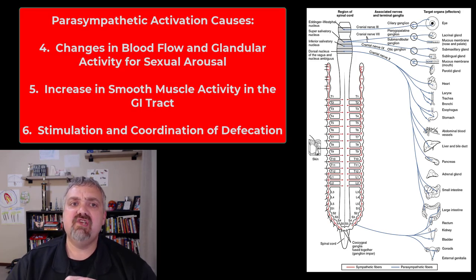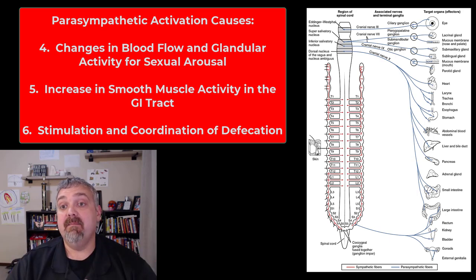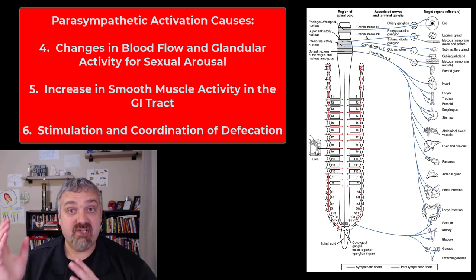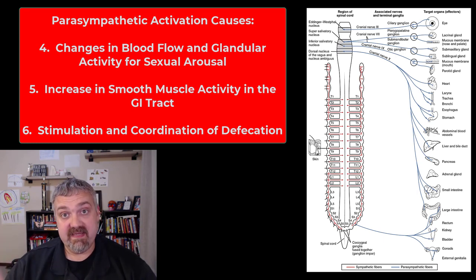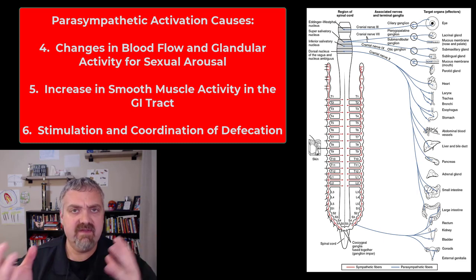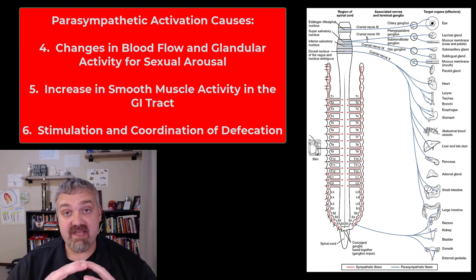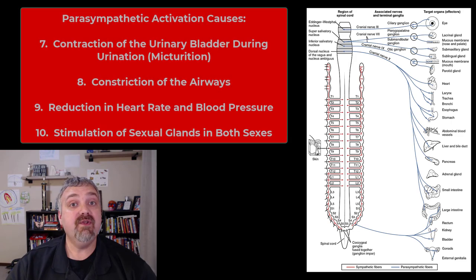Number four would be changes in blood flow and glandular activity associated with sexual arousal. Sexual arousal in both males and females is a parasympathetic response, which is why you need to relax. The parasympathetic nervous system is needed for a man to achieve an erection, while ejaculation is a sympathetic response. Number five is an increase in smooth muscle activity along the GI tract, moving food as you digest, absorb, and eliminate it — which leads to number six, the stimulation and coordination of defecation, which is a parasympathetic response.